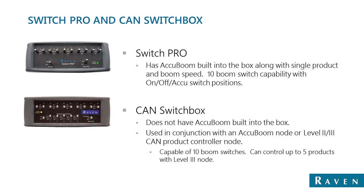The Raven Switch Pro is another option with built-in AccuBoom. It comes with built-in product control and a boom speed node. It has a three-position switch to force sections on, force them off, or let AccuBoom take over. The CAN switch box does not have AccuBoom built in, but the AccuBoom node is built into product nodes. A regular single product node can be used with the 316 AccuBoom node, offering 10-boom switch capability and the ability to control products on, off, and manual with the Raven CAN switch box.